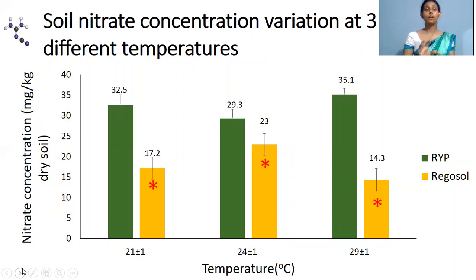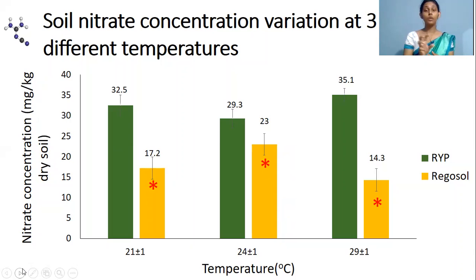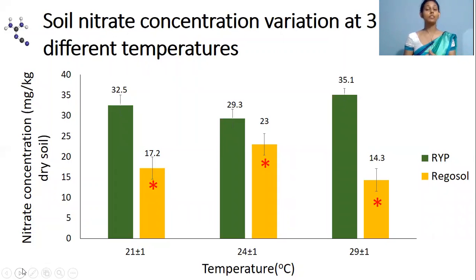Also, significant differences in nitrate concentration between the three temperatures are observed only in Regosol soil. The reason for this observation can be explained using the organic matter and clay contents of these two soils.